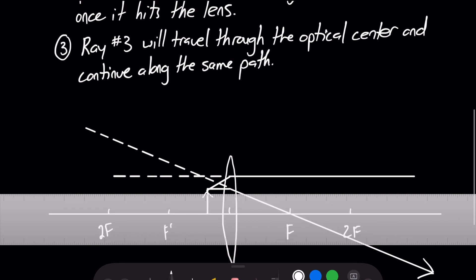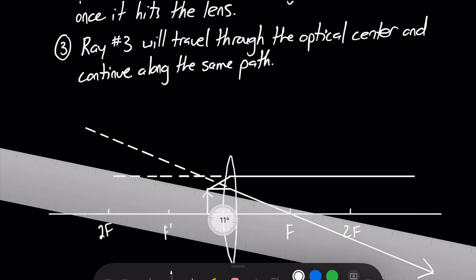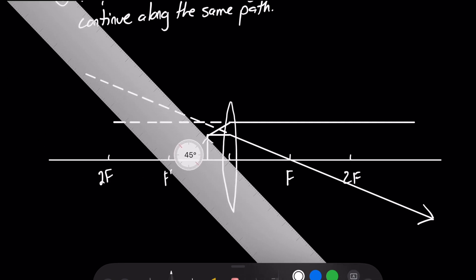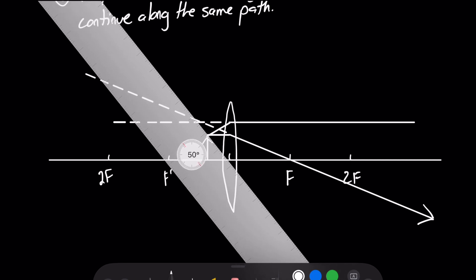But let's make sure here with rule number three. At the very top there, it says ray number three will travel through the optical center and continue along the same path. So remember, the optical center is just right in the middle of our lens here, we're going to line the top of our object up with that optical center. And we should get a pretty good idea of where our image is going to be. Let me just make sure it's right on the money here. Right about there. So it's going to go through the optical center.